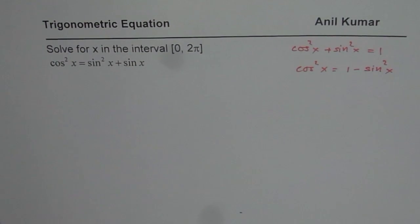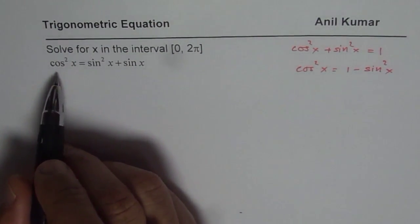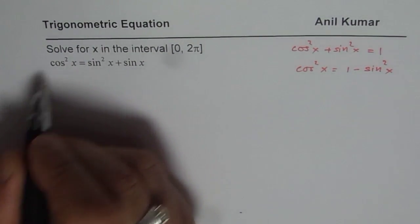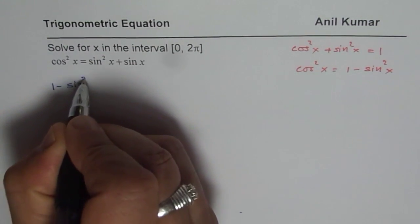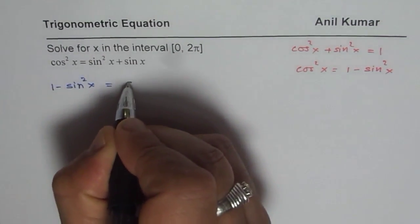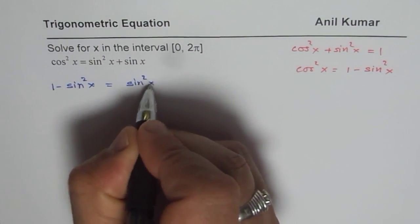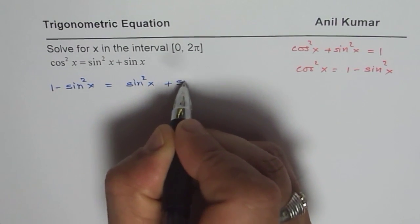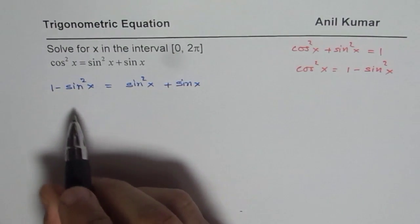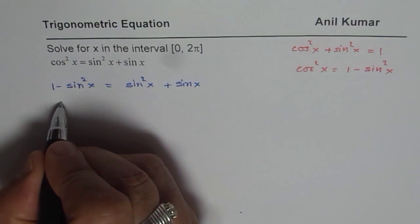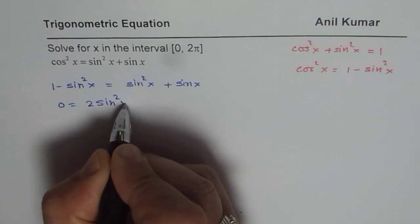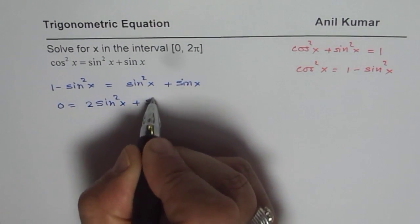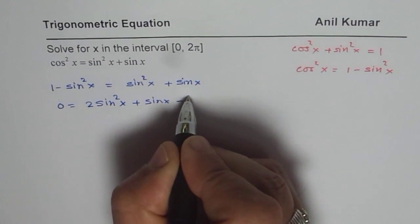So we can rewrite the given equation as, on the left side, I replace cos²x by 1 - sin²x. And that equals sin²x + sin x. Now we can take all these terms to the right side. So if I do that, I get 0 = 2sin²x + sin x - 1.